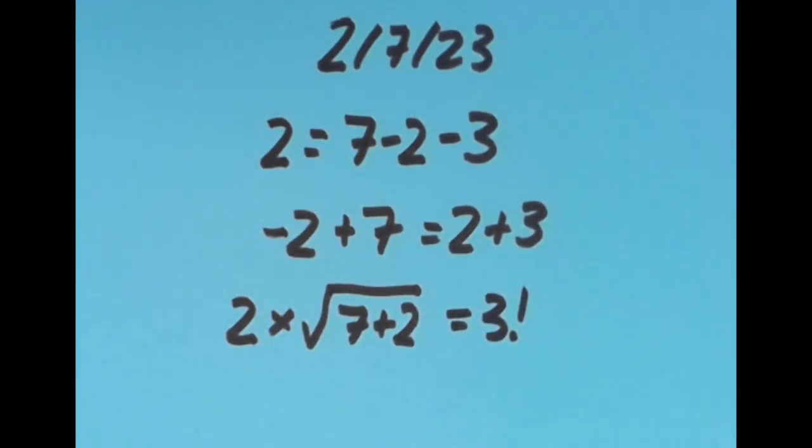Because the factorial means to take a number and multiply it all the way down to 1. So 3 factorial is 3 times 2 times 1, which is 6. I put some more information about the factorial in the description for today's video. Anyway, we have 2 times 3, which is 6, and 3 factorial, which is 6, and that's what I chose to do for today's date.